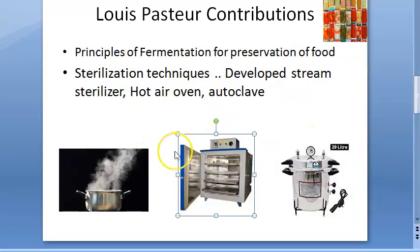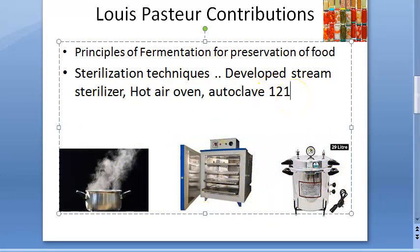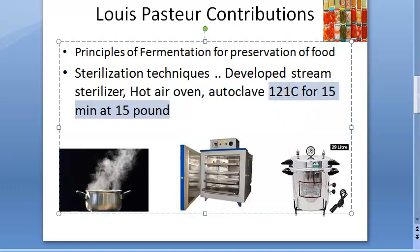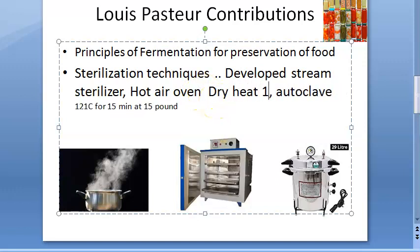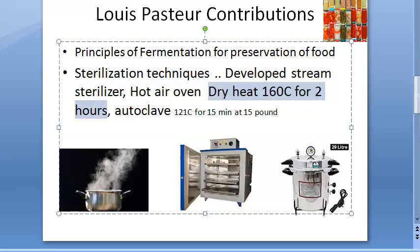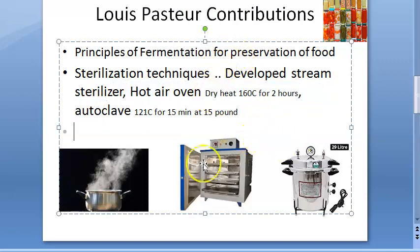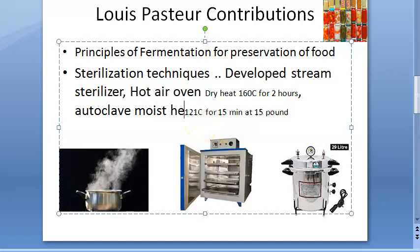If they ask for more marks, you can explain how these work. Autoclave operates at 121 degrees centigrade for 15 minutes at 15 pounds pressure. Hot air oven uses dry heat at 160 degrees centigrade for two hours. The autoclave is like a pressure cooker, so it uses moist heat only.